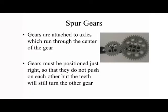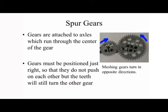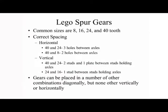Spur gears are attached to axles which run through the center of the gear. Gears must be positioned just right so that they do not push on each other but the teeth will still turn the other gear. Common Lego spur gear sizes are 8, 16, 24, and 42 teeth. Correct spacing is essential.